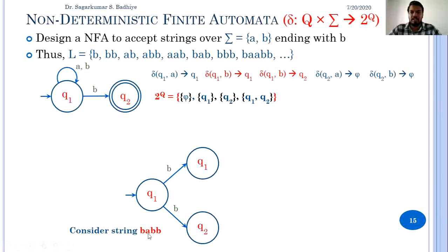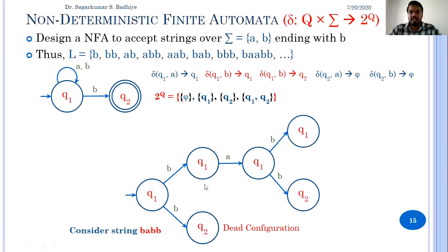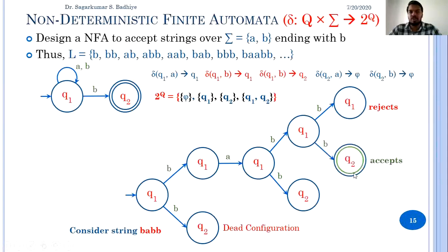From q1, the next input A is read. In q1, getting A transitions to q1 only — this is fixed. But in q2, getting A has no transition — this is called a dead configuration, so this path stops here. From q1, the next input is B, so again there are two possibilities: go to q1 or go to q2. If transition goes to q1, the next input is B again, and there are two possibilities: go to q1 and reject, or go to q2 and accept.